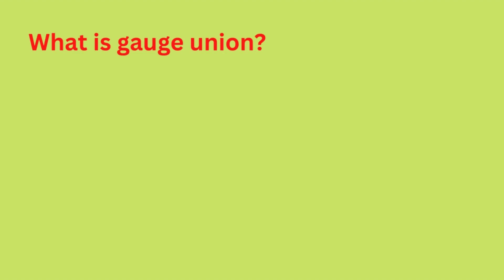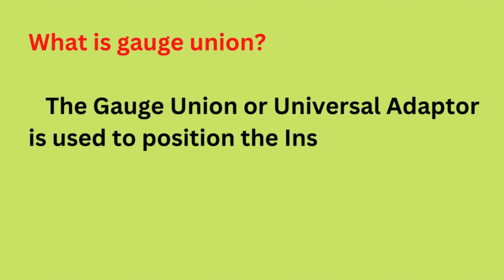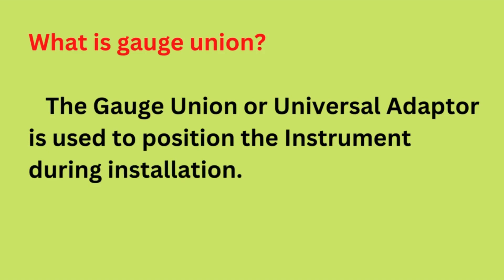What is a gauge union? The gauge union, or universal adapter, is used to position the instrument during installation.